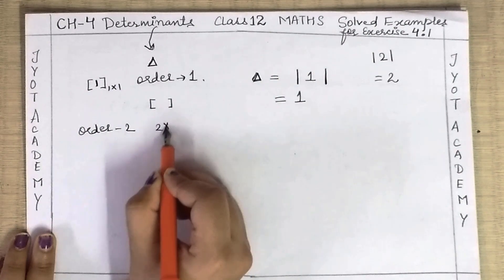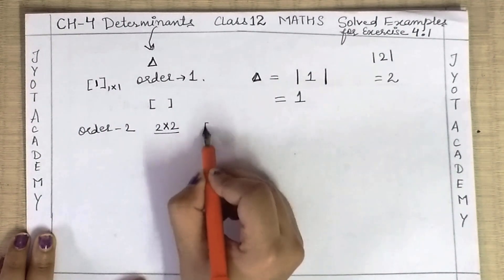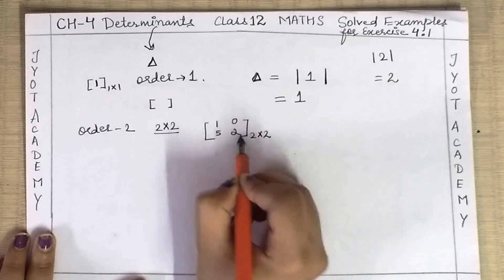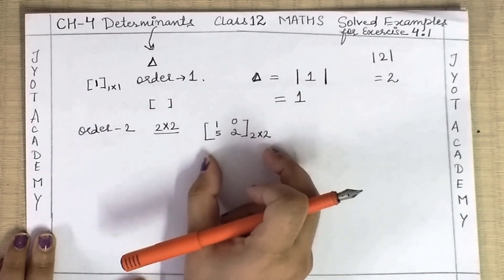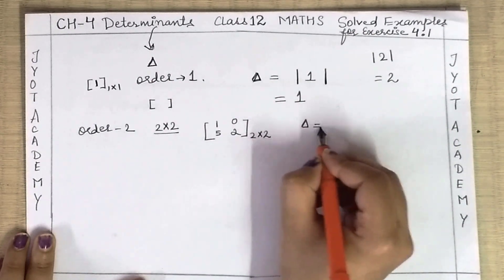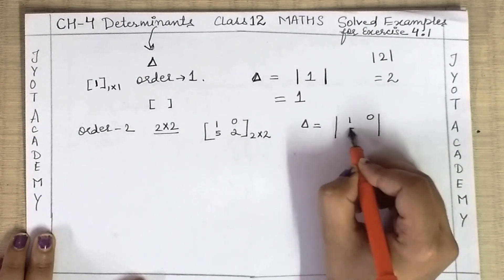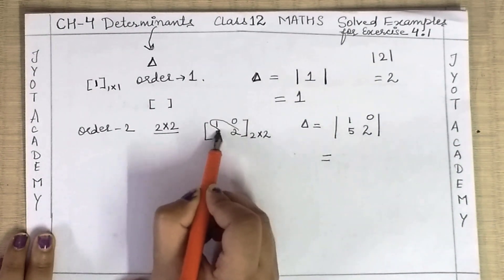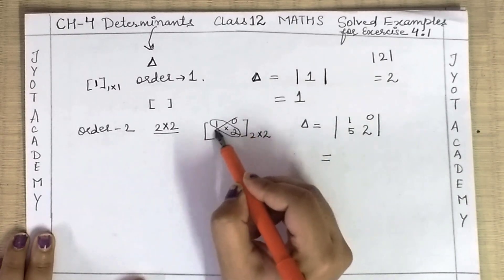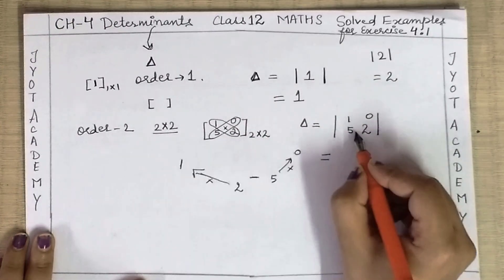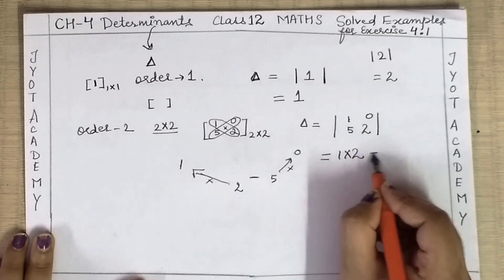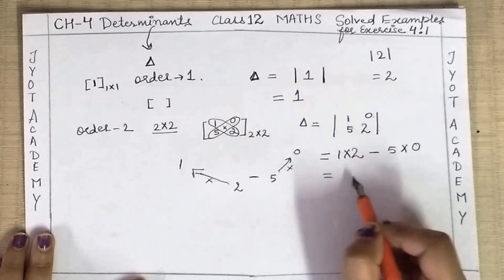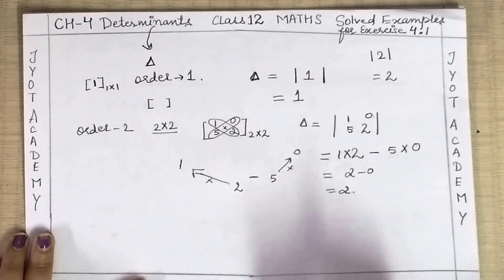Now for order two — that is, 2×2 matrices — let's see how the determinant is found. Here I have a 2×2 matrix with values 1, 0, 5, 2. To find its determinant, we draw two straight lines instead of brackets, and the method is: multiply the diagonal elements and subtract. So 1×2 minus 5×0 gives us a value of 2. This is how you find the determinant of any 2×2 matrix.